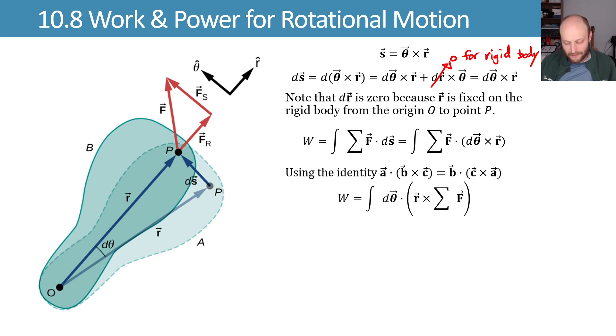I'm just going to use it to be able to rewrite my f dot d theta cross r as d theta dot r cross f. Now we're getting places. This r cross f is torque. That gives us our net torque, or sums of our torque acting on our body.